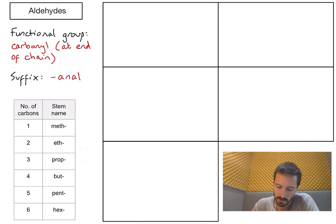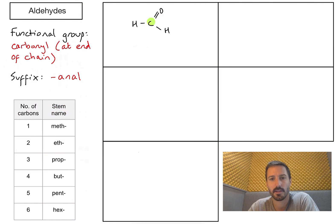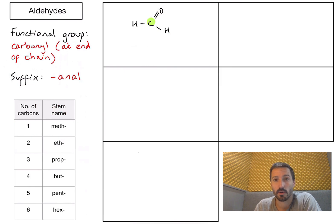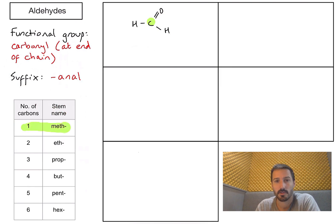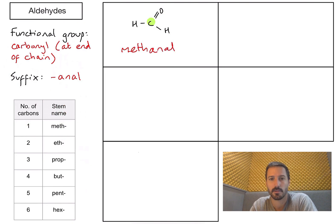Starting with the simplest possible example: there's the carbonyl functional group, and because there's only one carbon in that molecule it's automatically at the end of the chain, so it's definitely an aldehyde. Given there's only one carbon, the stem part of the name is going to be 'meth'. Writing that down with the suffix '-al', we get methanal.